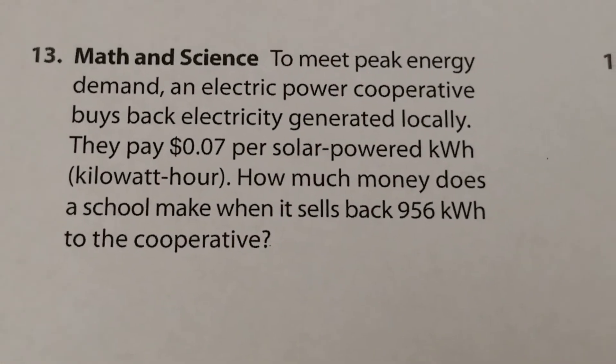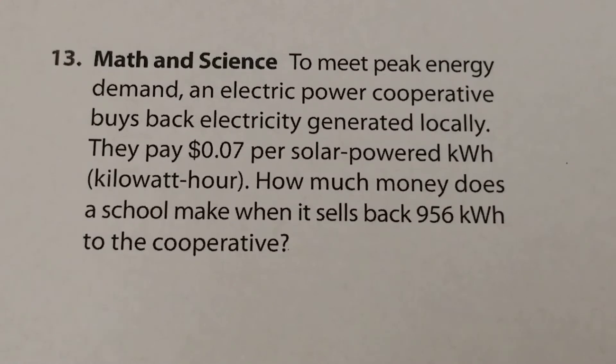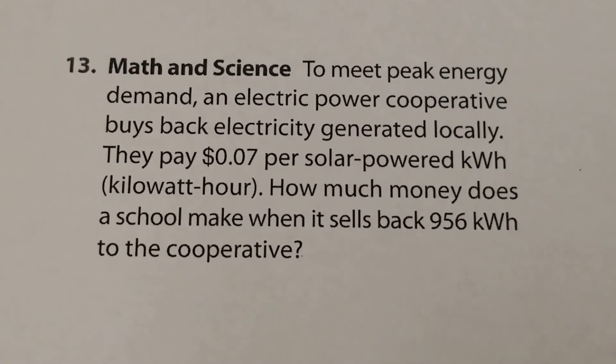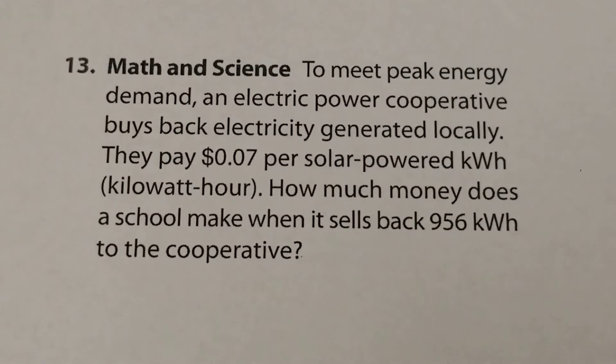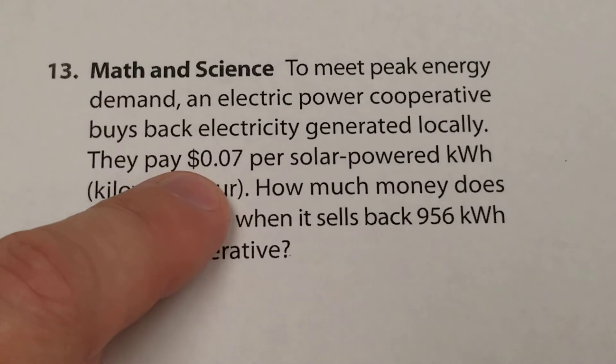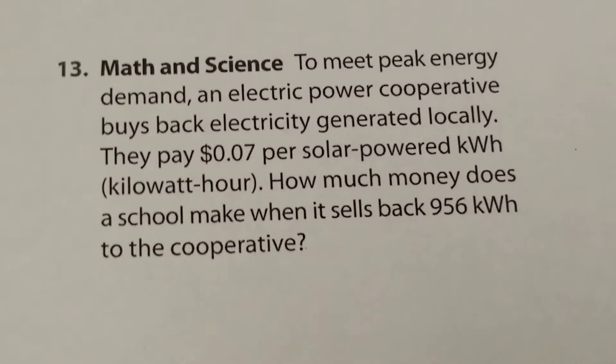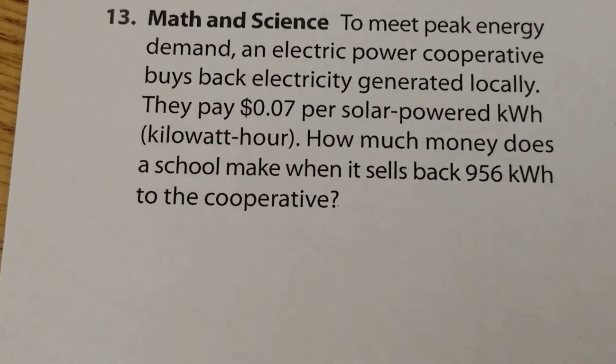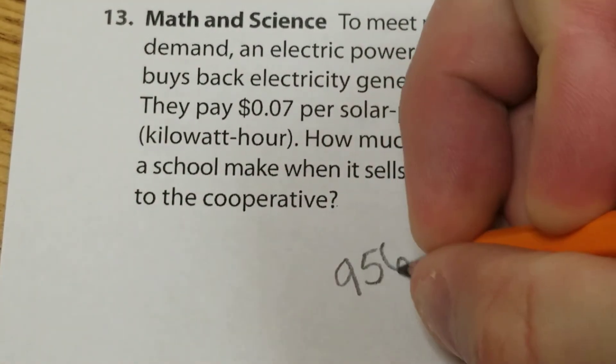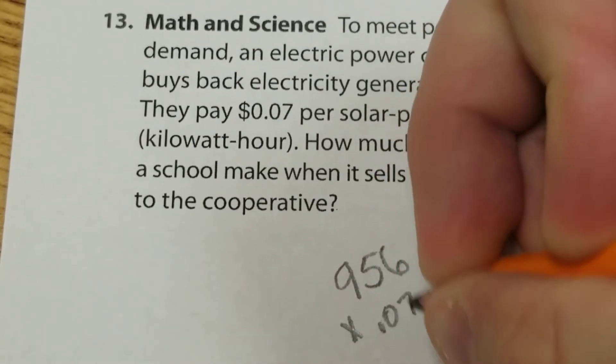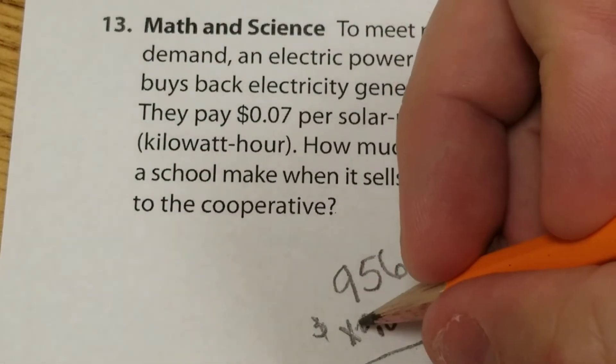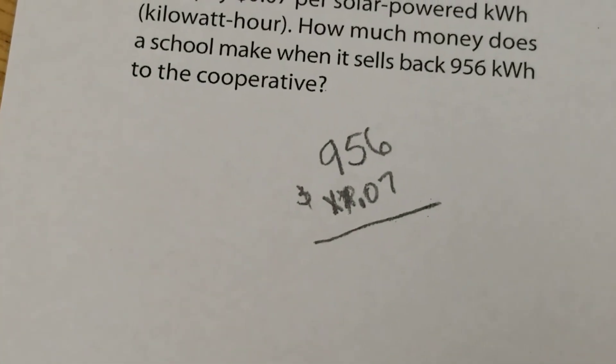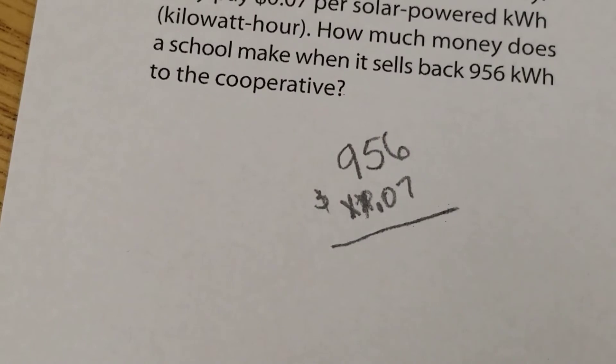To meet peak energy demand, an electric power cooperative buys back electricity generated locally. They pay 7 cents per solar power kilowatt-hour. How much money does a school make when it sells back 956 kilowatts to the cooperative? So we get 7 cents for every single one of these. How much money is that? Well, there's a bunch of them, that's basically repeated addition, which is multiplication. So I'm just going to take my 956 kilowatts times my 0.07, which is money. I'm going to get rid of this whole number for now. It's not going to affect my answer.